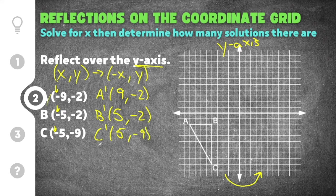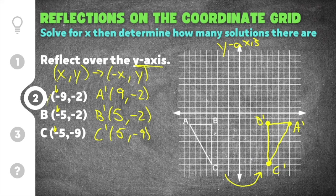Now that I have the coordinates for my new figure, I can go ahead and graph them. A prime is (9, negative 2), B prime is (5, negative 2), and C prime is (5, negative 9). I'm going to connect the vertices. You can see it's created a mirror image where the y-axis is directly in the middle, acting almost like a mirror between the two figures.